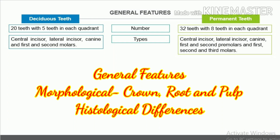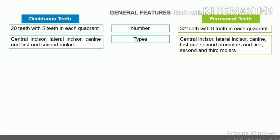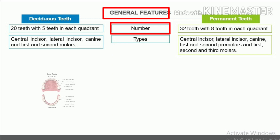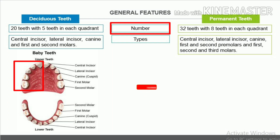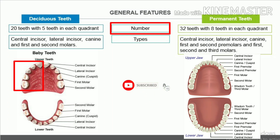General Features. Morphological differences present in the crown, root, and pulp anatomy. Histologic differences. General features — numbers. Deciduous teeth: there are 20 deciduous teeth with 5 teeth in each quadrant. Permanent teeth: there are 32 permanent teeth with 8 teeth in each quadrant.